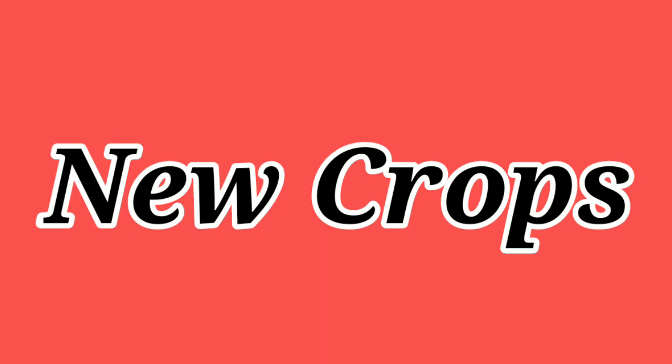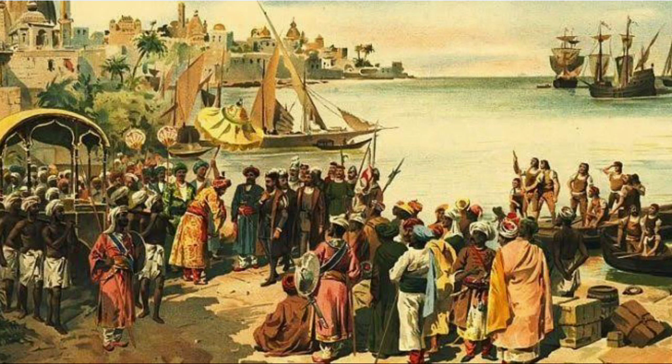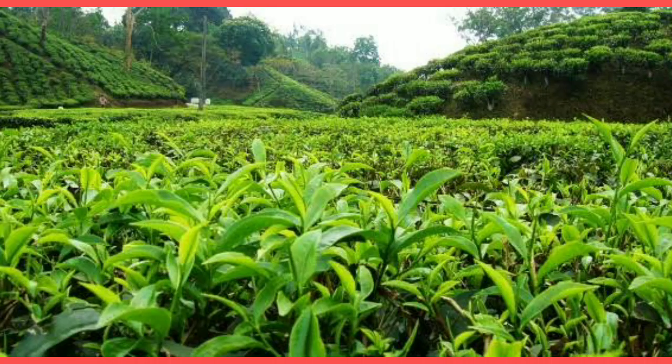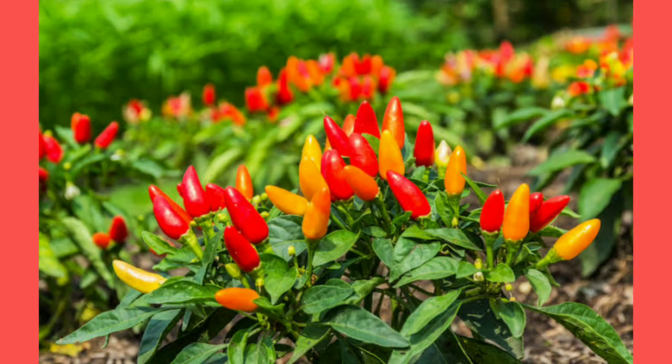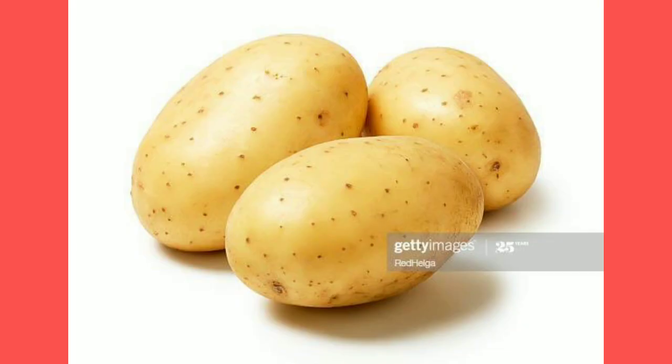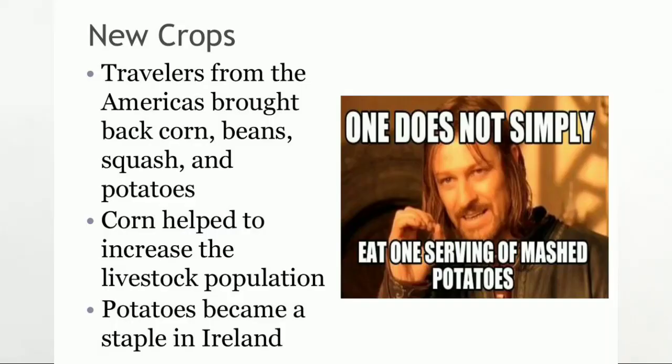The next factor is new crops. As travellers came in, they brought new types of crops with them — like tea, coffee, chili, corn, and potatoes. These are some of the new crops introduced in the subcontinent during the medieval period.